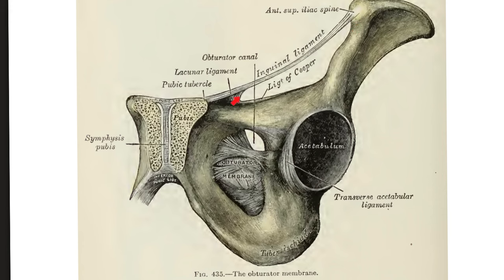There is another smaller ligament here called the ligament of Cooper. What is the name of the other organ in your body that also has a ligament of Cooper? The answer is the breast. After menopause, the suspensory ligament of Cooper of the female breast gets more lax.